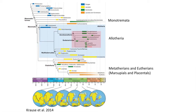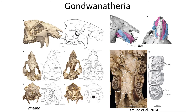Another group of Allotheria worth mentioning is a group likely related to the Euharamiyida, but restricted to the southern continents during the Cretaceous: the Gondwanatheria. Known mostly from isolated teeth, the best known Gondwanatherian is Vintana from Madagascar. It was a marmot-like mammal with multi-cusped molars that show wear from chewing, like modern grinding mammals, and large procumbent incisors.